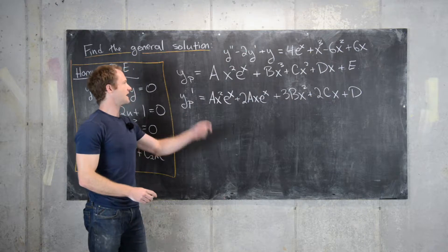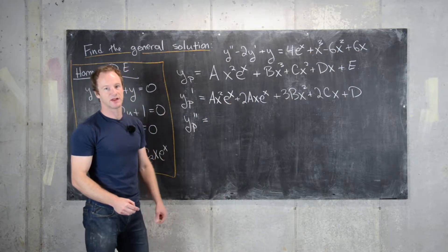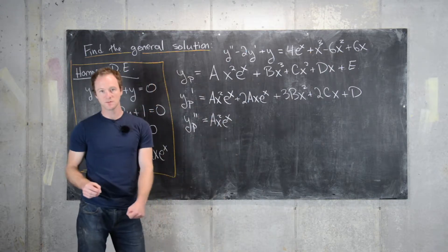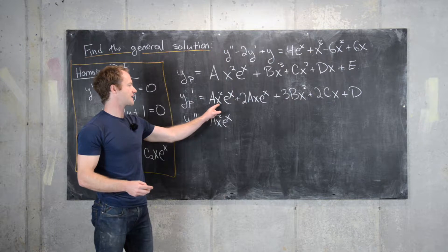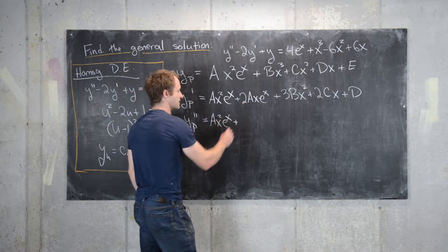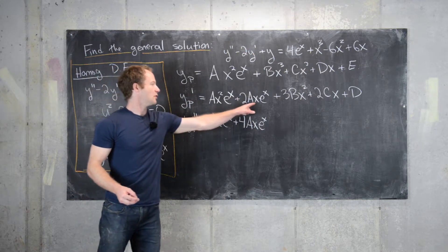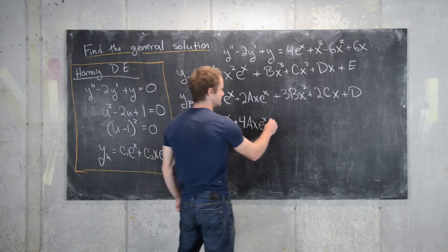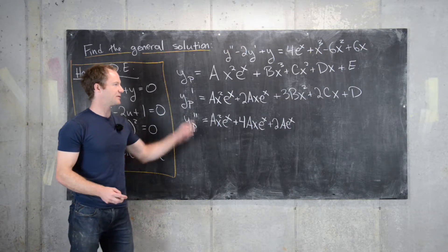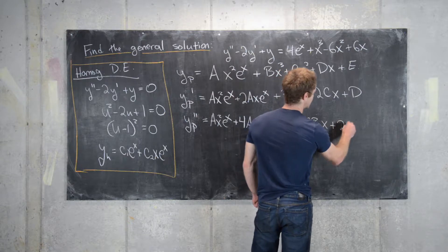For the second derivative y_p'', each exponential term splits again via the product rule. We get another a·x²·e^x, and the x·e^x terms combine to give 4a·x·e^x. From the remaining term we get 2a·e^x. The derivative of the polynomial part gives 6b·x + 2c, and the derivative of d is zero.